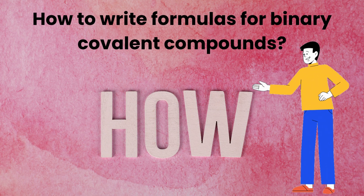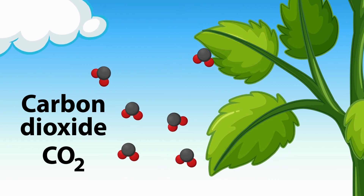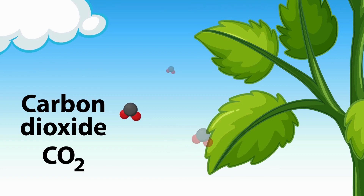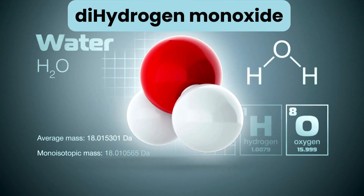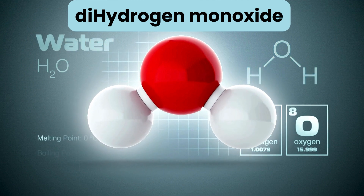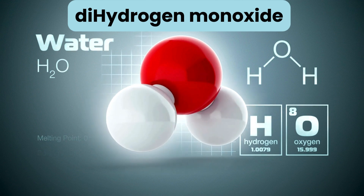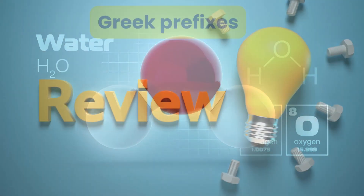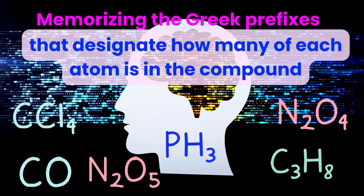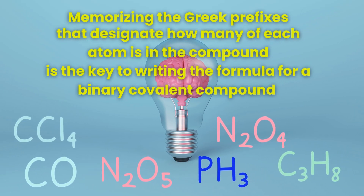How to write formulas for binary covalent compounds? Covalent compounds exist as molecules, so molecular formulas are used to describe covalent compounds. For example, in dihydrogen monoxide, there are di or two hydrogen atoms and mono or one oxygen atom that share electrons to form a water molecule. So the formula is H2O.